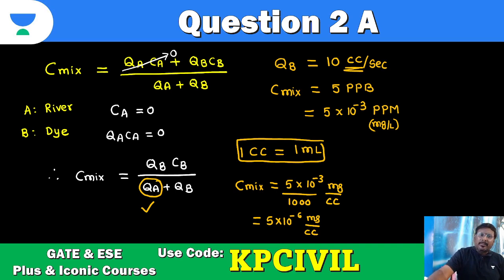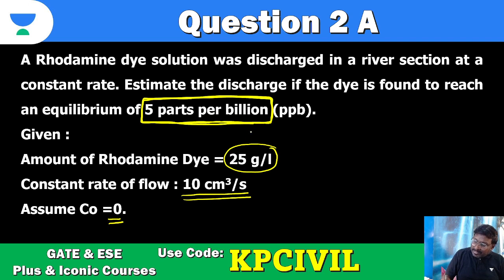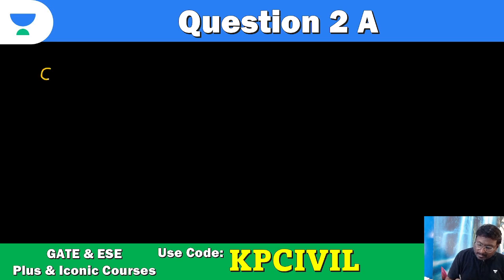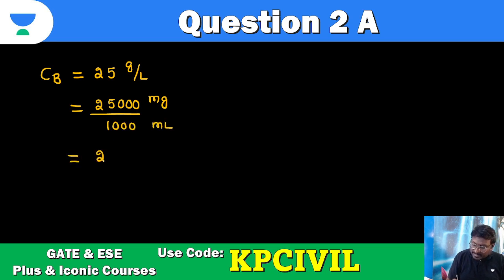Discharge 10 cc per second. And already provided existing Cb 25 gram per liter. Completely question is related to unit conversion. If you know unit conversion, this will be done. 25 gram per liter - 25,000 mg upon 1000 ml. ml is cc. So you can take it directly as 25 mg per ml, ml is cc, 25 mg per cc. Now we'll substitute in our formula.